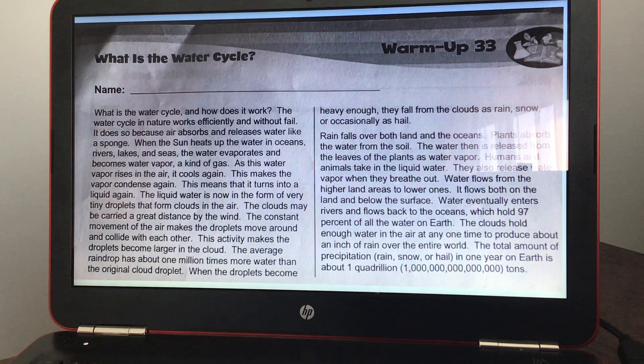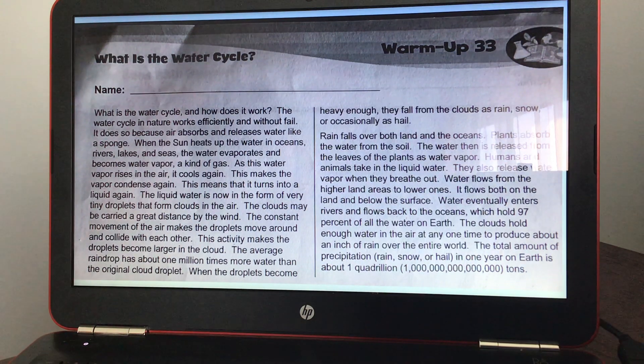When the droplets become heavy enough, they fall from the clouds as rain, snow, or occasionally as hail. Rain falls over both land and the oceans. Plants absorb the water from the soil. The water then is released from the leaves of the plants as water vapor. Humans and animals take in the liquid water. They also release water vapor when they breathe out.